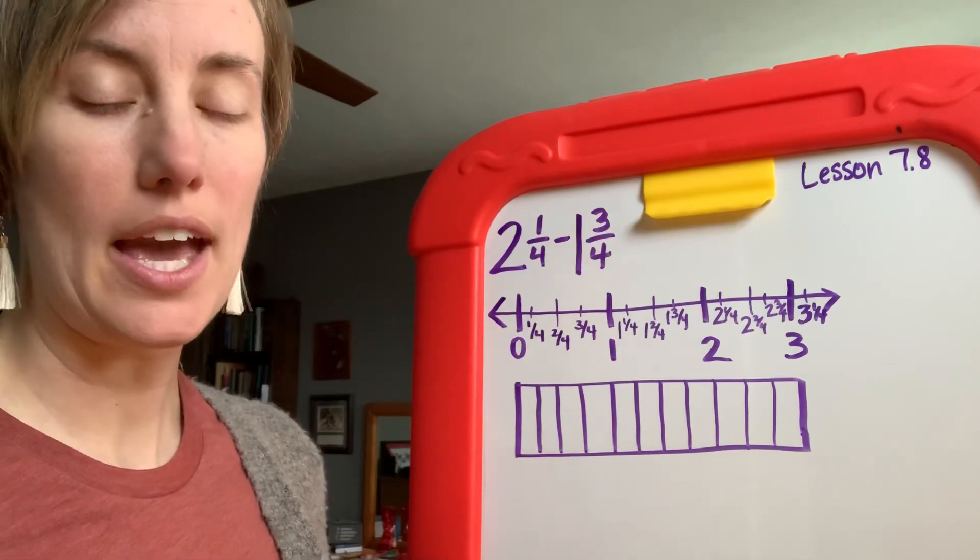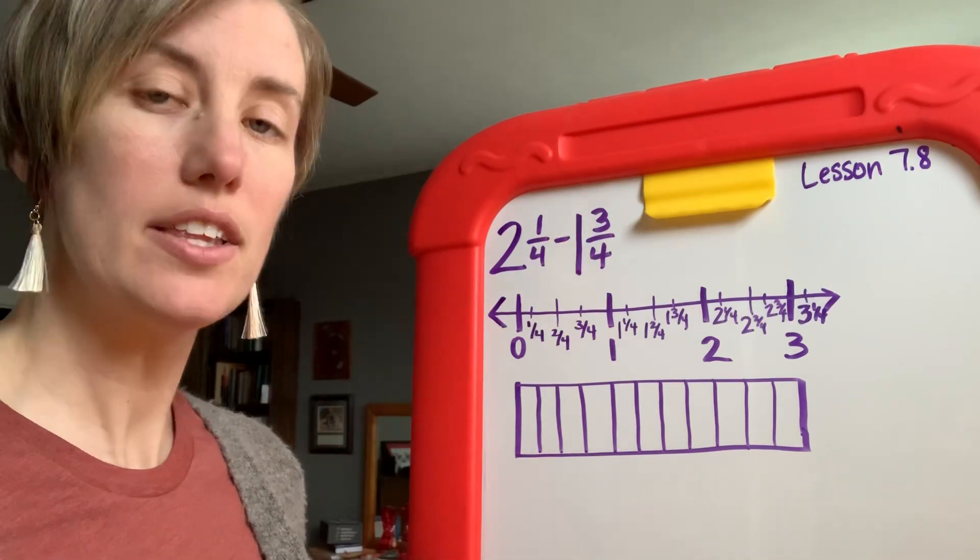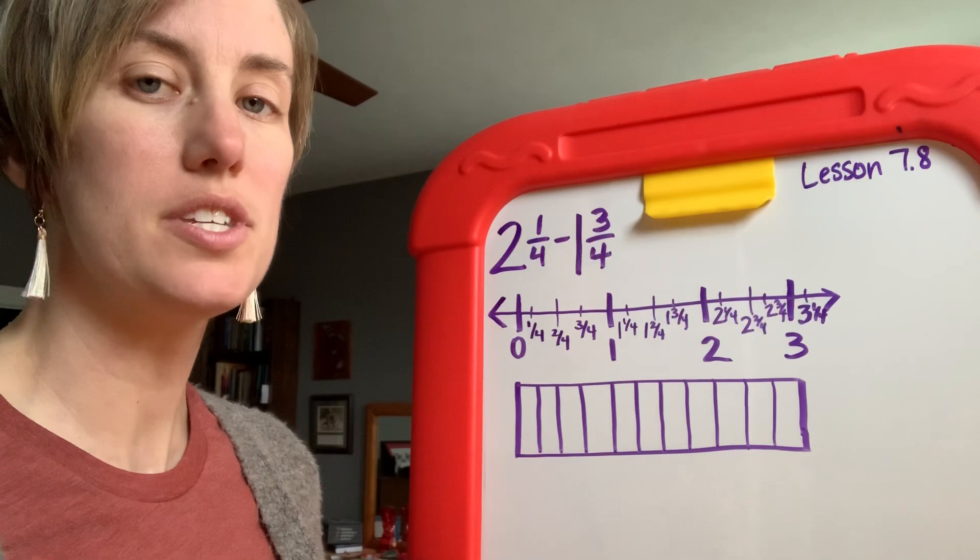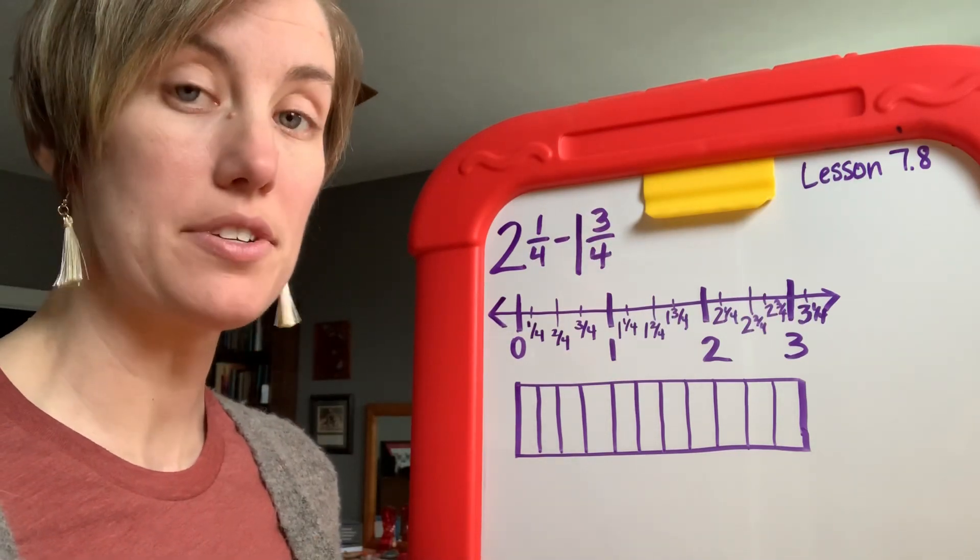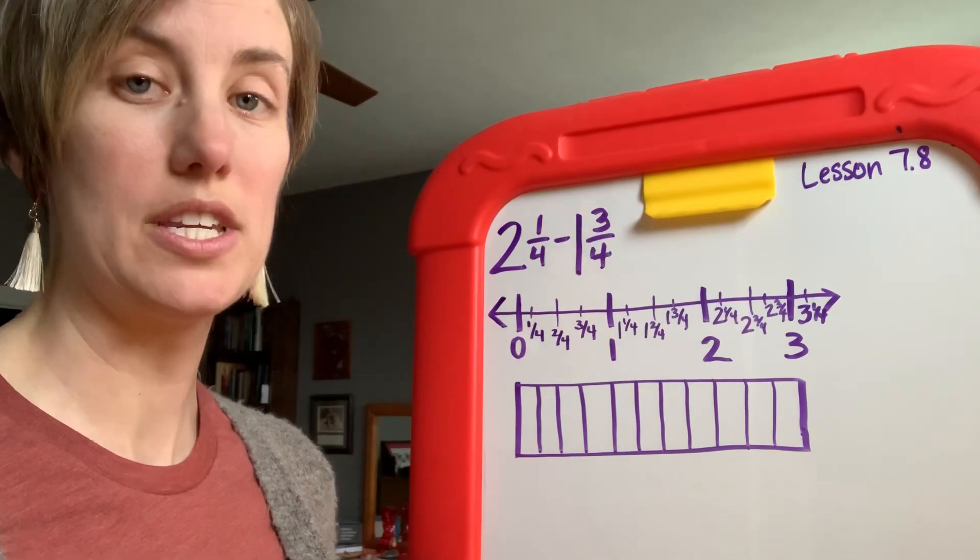Lesson 7.8 is a heavy lesson that refers to teaching students to subtract mixed numbers with renaming when needing to rename.